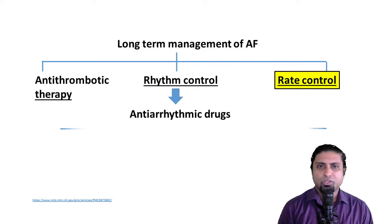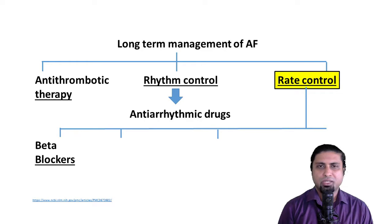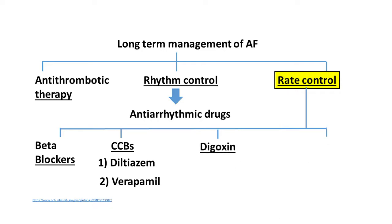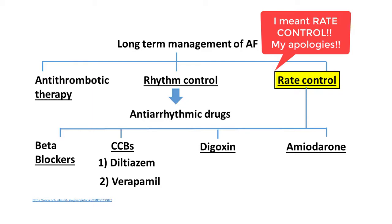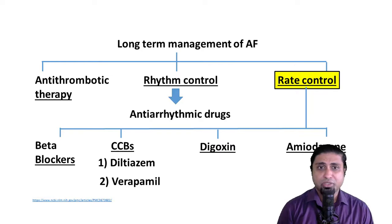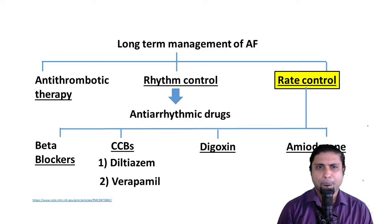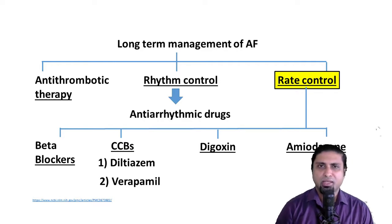The drugs most commonly used for rate control include beta blockers, the non-dihydropyridine calcium channel blockers — namely diltiazem and verapamil — cardiac glycosides like digoxin, and amiodarone. Beta blockers are class 2 antiarrhythmic drugs; the non-dihydropyridine calcium channel blockers are class 4; digoxin comes under the so-called unclassifiable antiarrhythmic drugs; and amiodarone comes under class 3. All these drugs used for rate control are in fact antiarrhythmic drugs, but when given for rate control, they have very little effect on the rhythm of the heart — the main purpose is to control the rate.